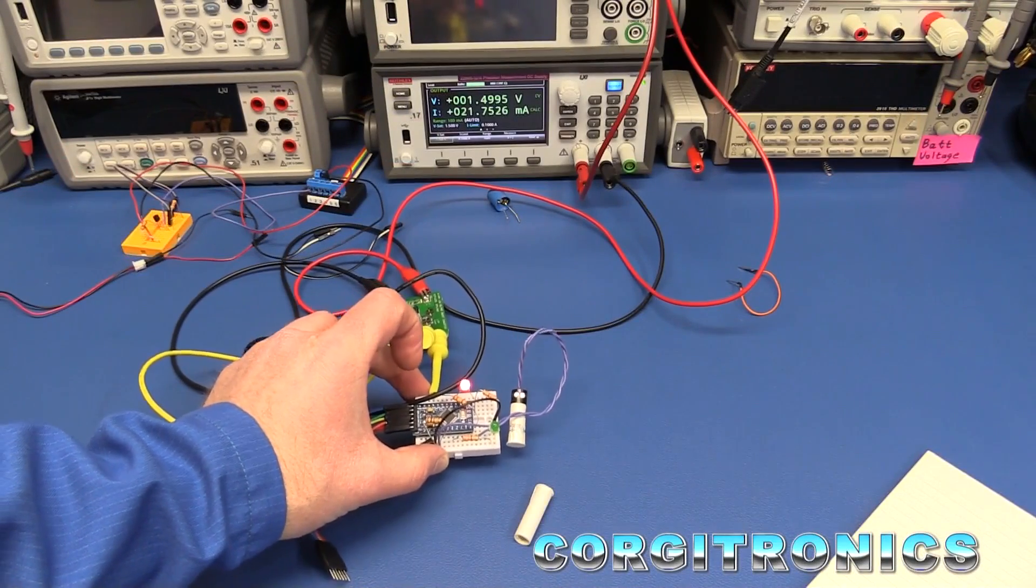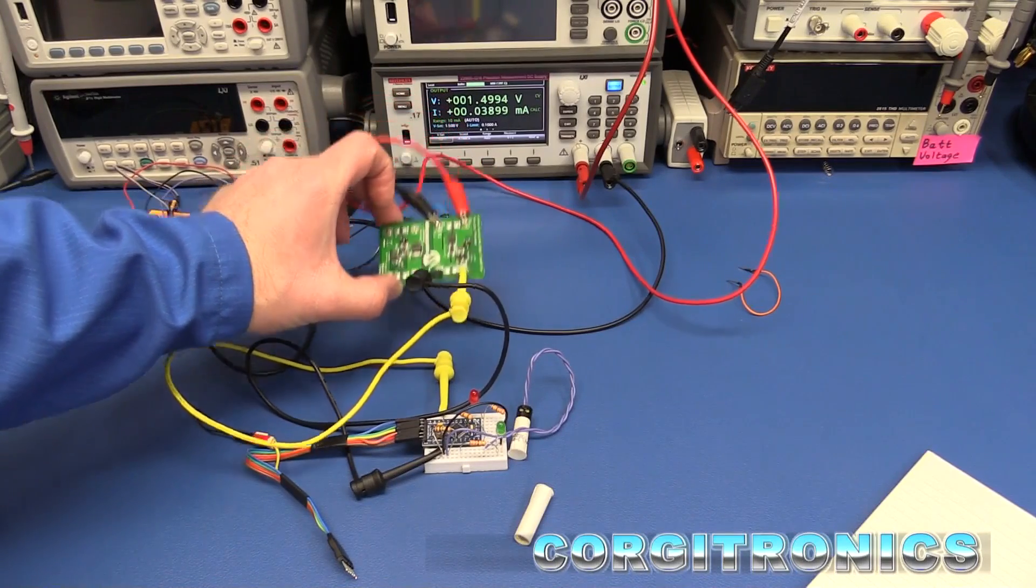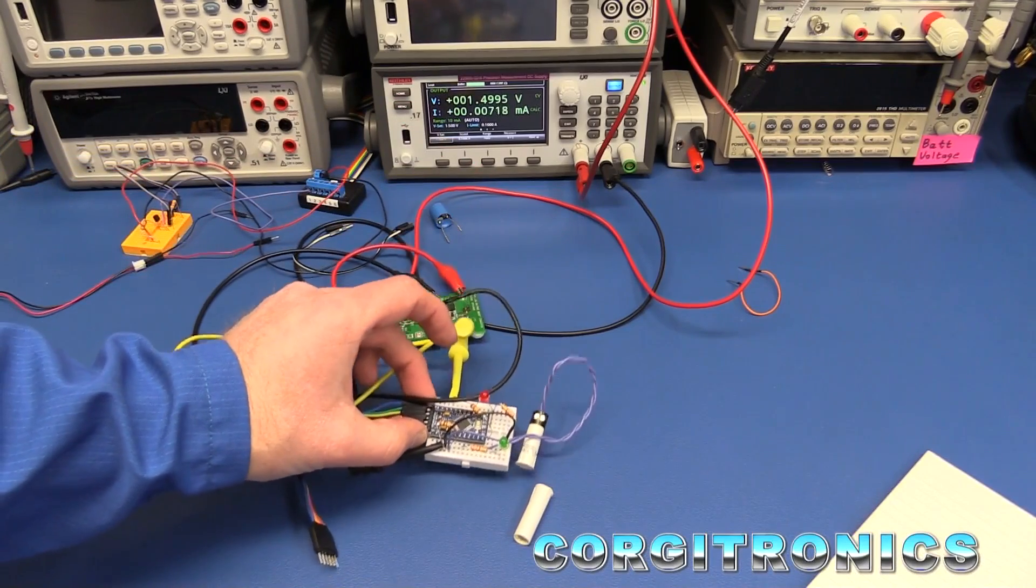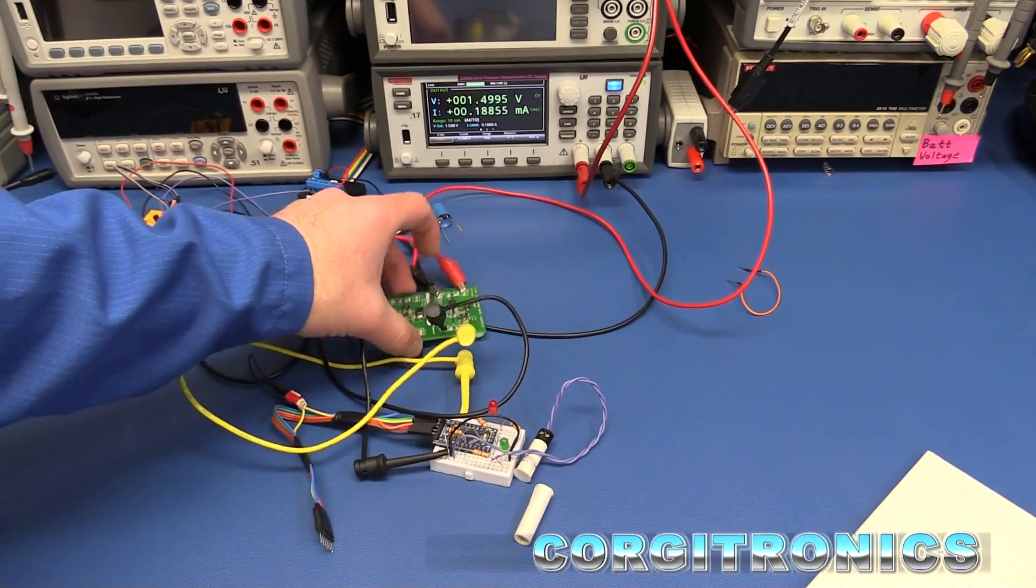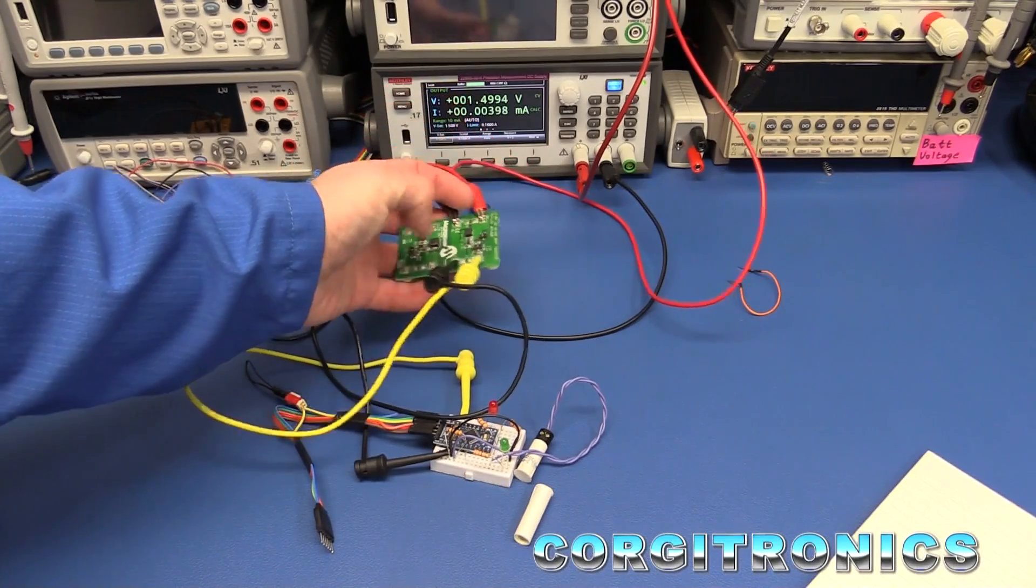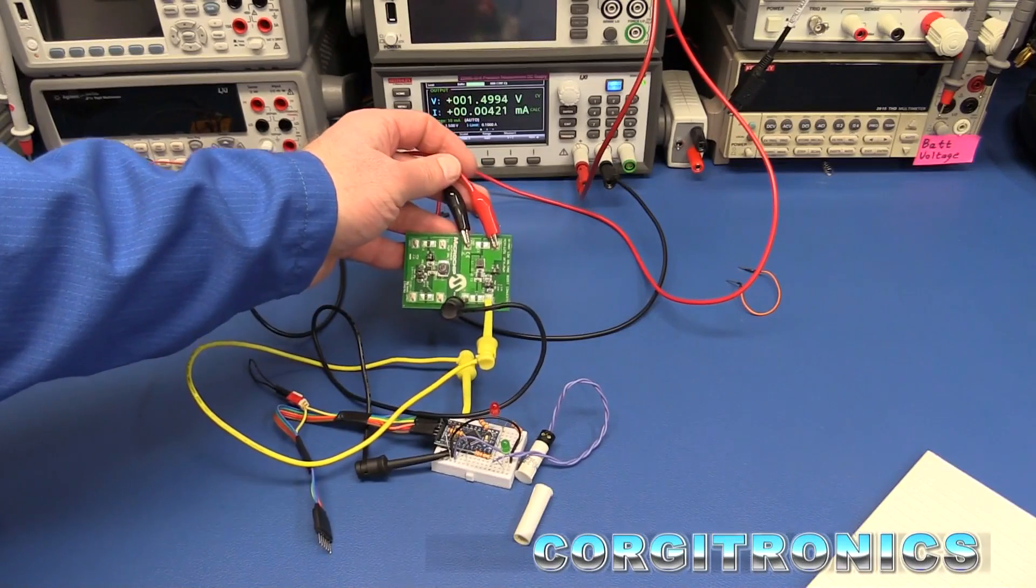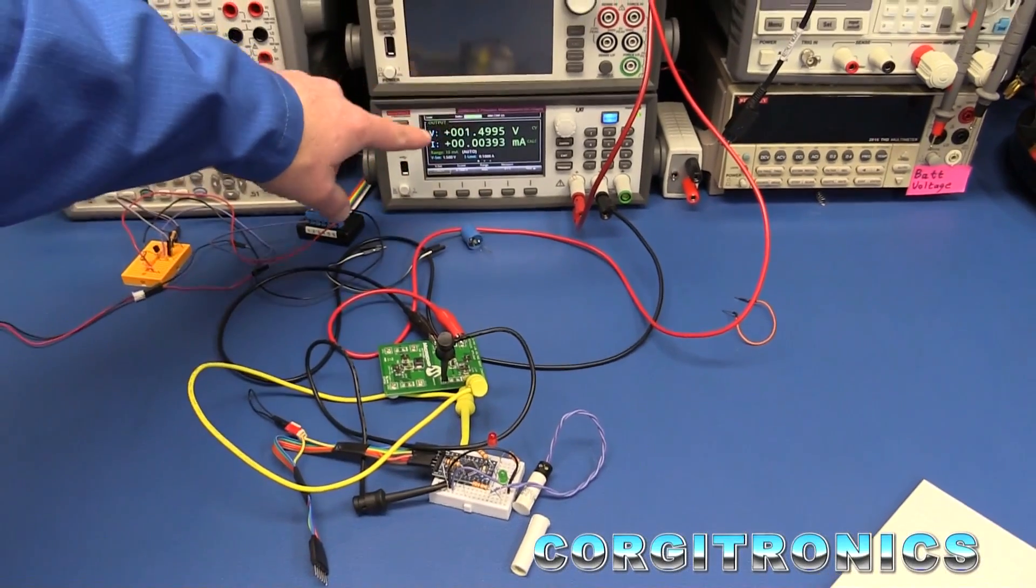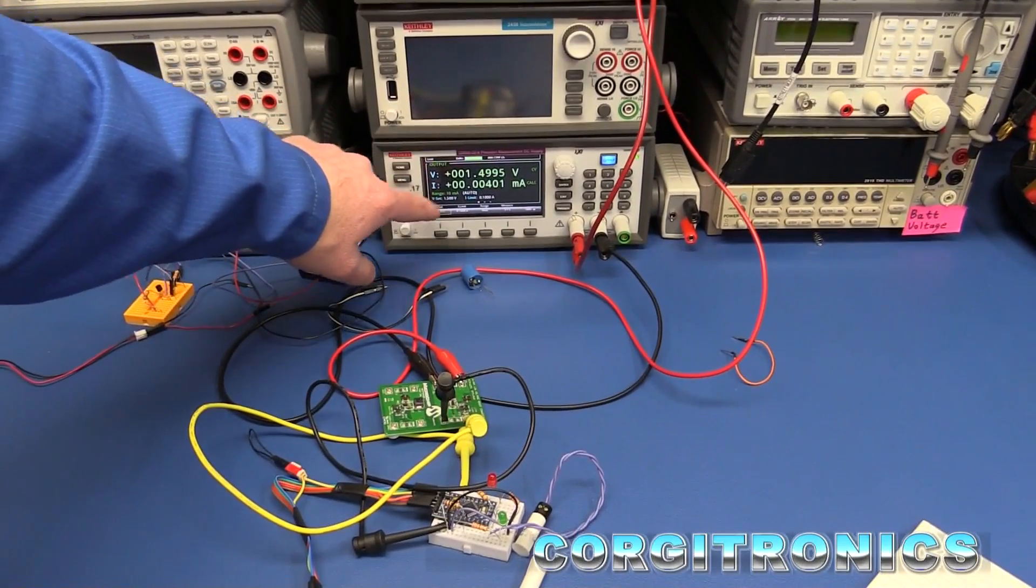Here's our test setup. We have the wireless node and our boost converter. The wireless node is powered directly into the Arduino itself without a regulator or anything else by the 3.3 volt output of the boost converter. And that is coming in through the yellow and black clip leads.